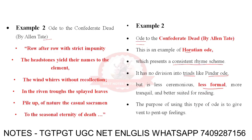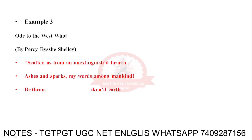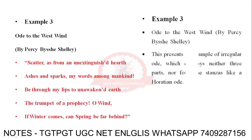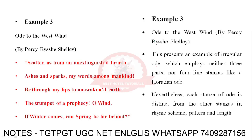The purpose of using this type of ode is to give vent to pent-up feelings. Ode to the West Wind by P.B. Shelley presents an example of an irregular ode, which employs neither three-part triads nor four-line stanzas like a Horatian ode. Nevertheless, each stanza of the ode is distinct from the others in rhyme scheme, pattern, and length. That's why this is an example of an irregular ode.